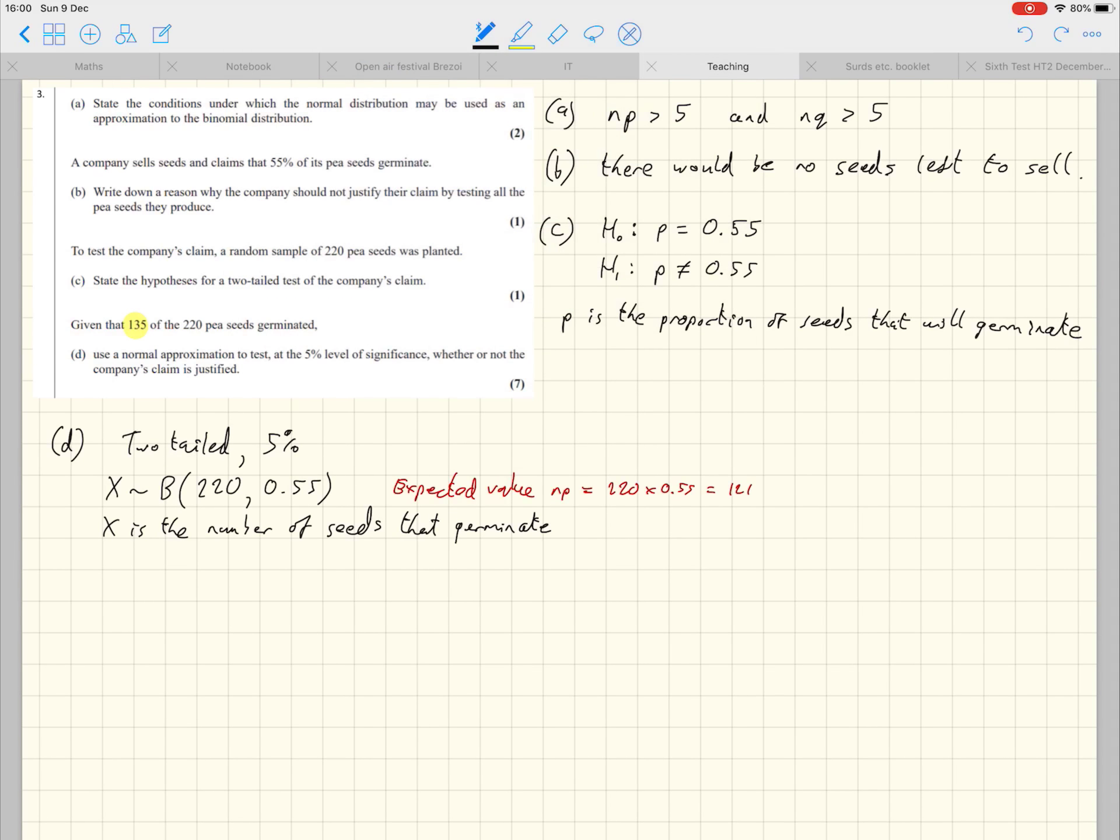So we want to find the probability that the number of seeds that germinate is at least as extreme as 135. Now be careful, we do not ever in hypothesis tests work out exact probabilities like X equals 135, because the probability of any specific number from a sample of 220 is going to be incredibly small. So it's kind of meaningless that. What has meaning is at least as extreme as 135. Sorry, including that. So at least as extreme as 135.